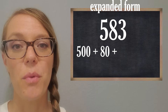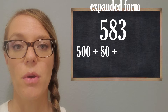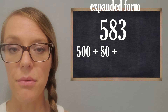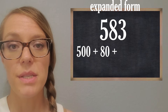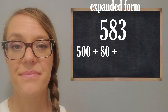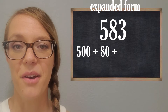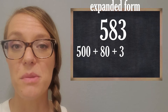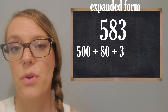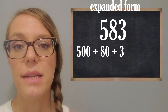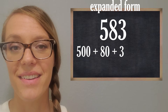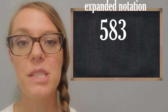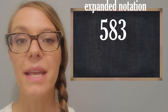We're going to write down another plus sign to show we're adding up that last place value. The three — what is that really worth? It's worth three because it's in the ones place, so it's just worth three. And that is expanded form right there.